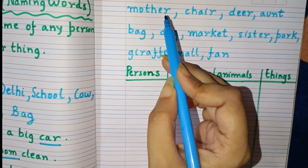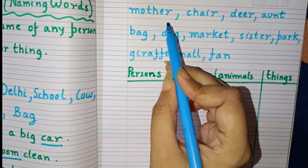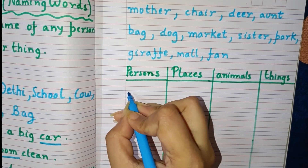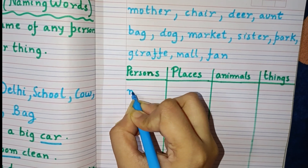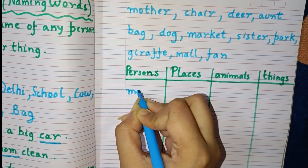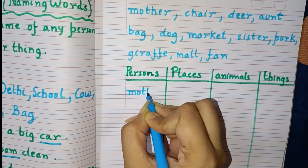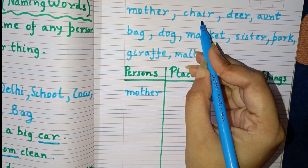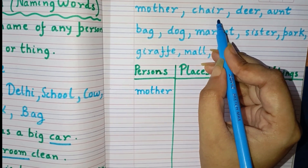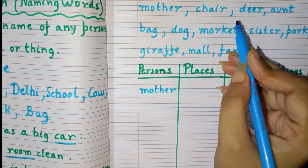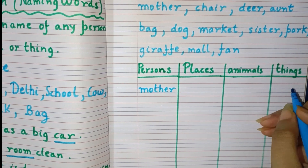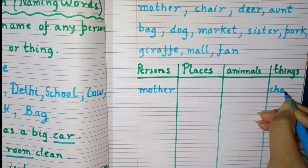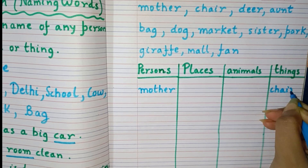First is mother. Mother is a person, so we will write it in the persons column — M-O-T-H-E-R, mother. Next is chair. Chair is a thing, so we will put it in the things column — C-H-A-I-R, chair.